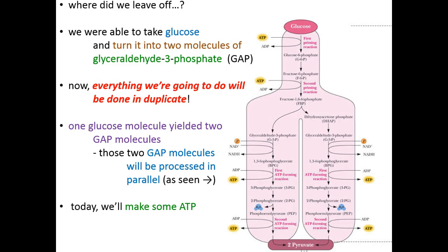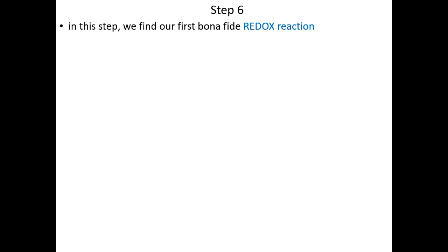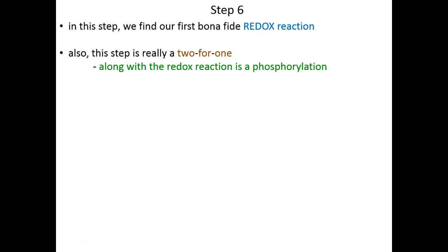We burned two ATP molecules in the last lecture. Today we'll start making some ATP to break even, and then we'll even make an ATP profit — that's the payoff phase. So let's jump right back in. If we left off on step five, we're going to pick up on step six, and this step is our first real bona fide redox reaction. This step is also two different reaction types rolled into one, so this is almost a twofer.